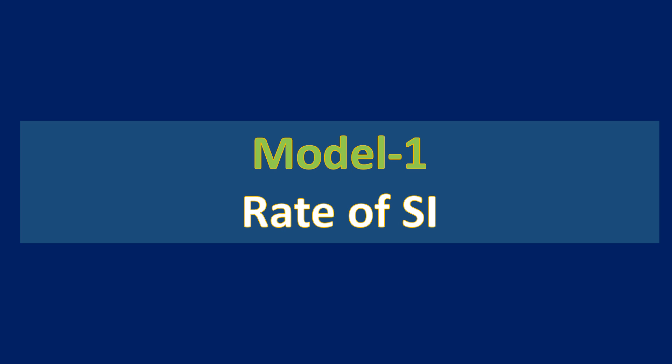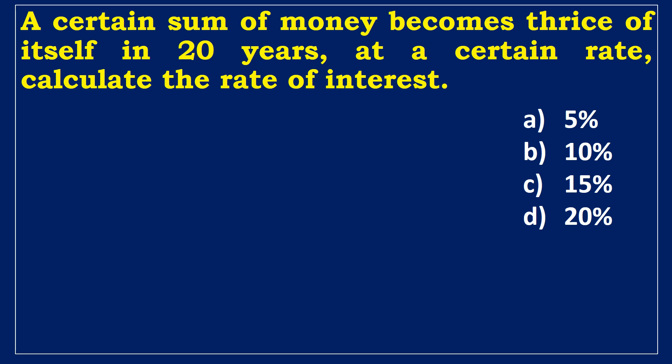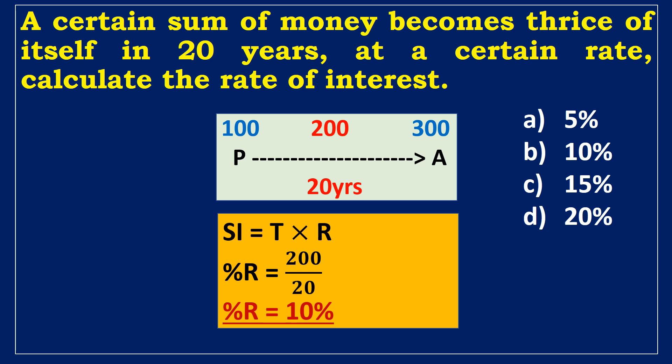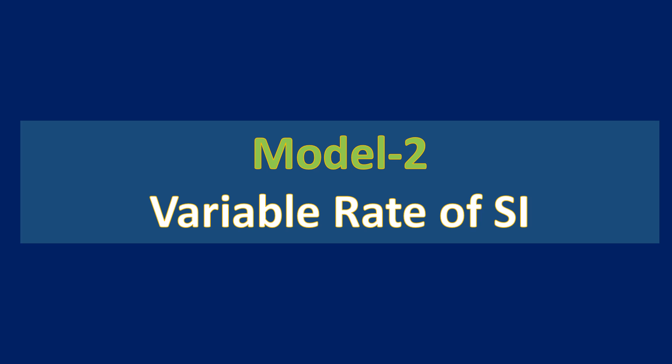Model 1: Rate of Simple Interest. A certain sum of money becomes thrice of itself in 20 years at a certain rate. Calculate the rate of interest. Assume the principal is 100 rupees. This sum becomes 300 rupees over 20 years, so the simple interest is 200 rupees over 20 years. Using the formula, the annual interest rate is 200 divided by 20, which equals 10%.